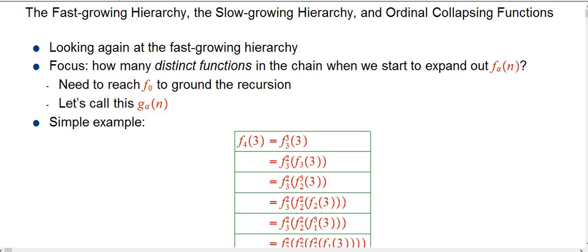We're going to look more carefully at the fast-growing hierarchy. And I want to focus on this: when you start to expand out a function, how many distinct functions do you get in the chain, the composition chain that starts happening when you start to expand out, just initially, how to evaluate f_α of n.